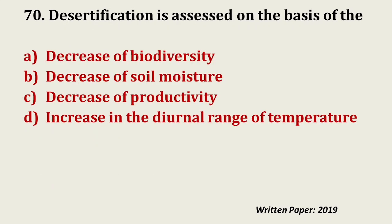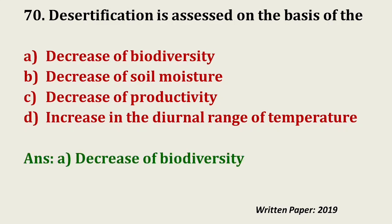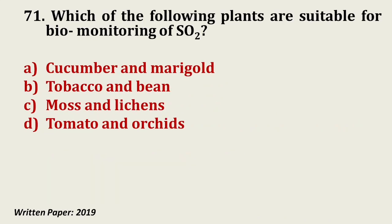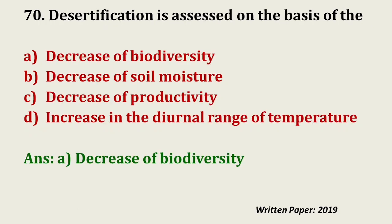Question number 70: Desertification is assessed on the basis of — decrease of biodiversity, decrease of soil moisture, decrease of productivity, or increase in the diurnal range of temperature? The answer is decrease of biodiversity. Desertification is the process of becoming a desert or barren land from a high vegetative or high floral zone, due to degradation and loss of soil quality.